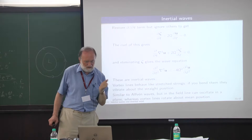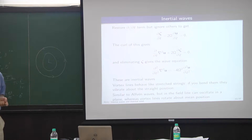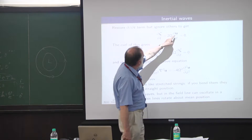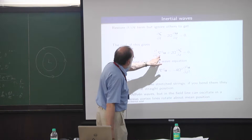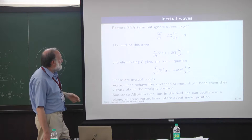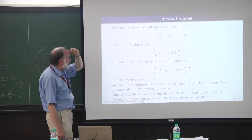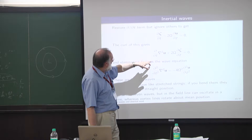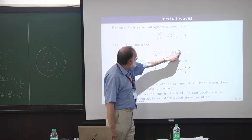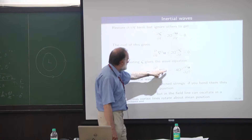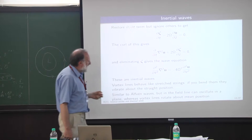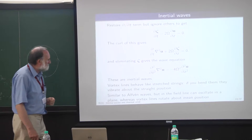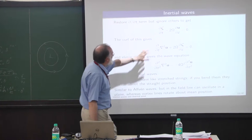The curl of the vorticity is the double curl of the velocity. Since curl curl equals grad div minus del-squared, you can replace it with del-squared, giving a del-squared u term. Taking the curl again gives zeta. Between these two equations you can eliminate the vorticity zeta: taking the time derivative and substituting gives a wave equation with a second derivative in time and a second derivative in space. These are called inertial waves because inertia is important here.